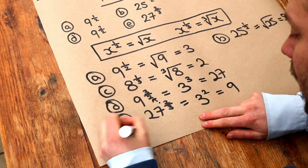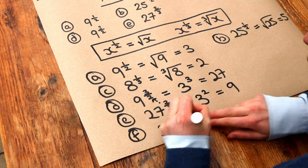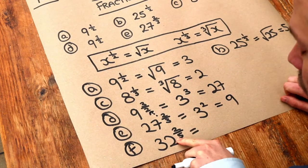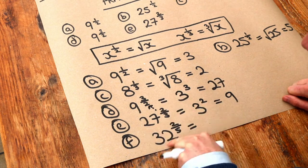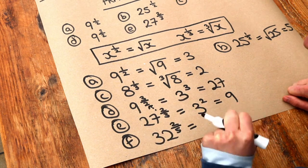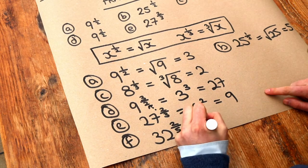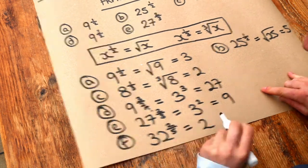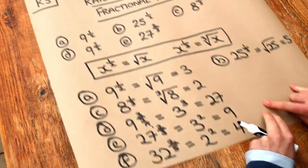One last example with a more complicated power. If I had 32 to the power of 2 fifths, we look at the 5 at the bottom of the fractional power first, so we do the 5th root of 32. That means what number to the power of 5 is 32? Well, it's 2. 2 to the power of 5 is 32. And we've still got that 2 in the numerator, and 2 squared is equal to 4.